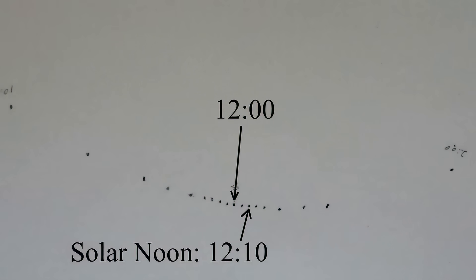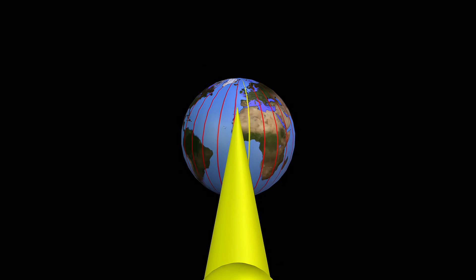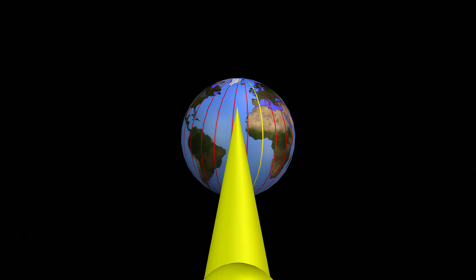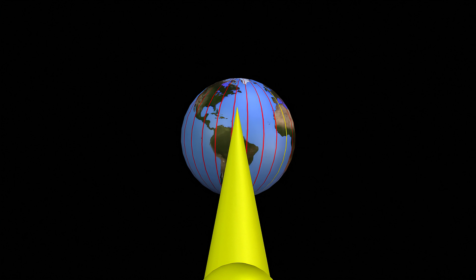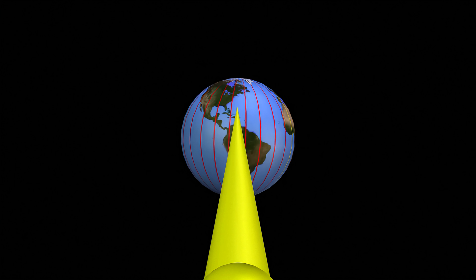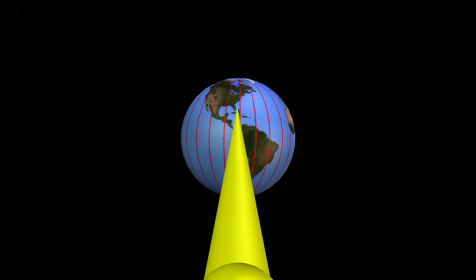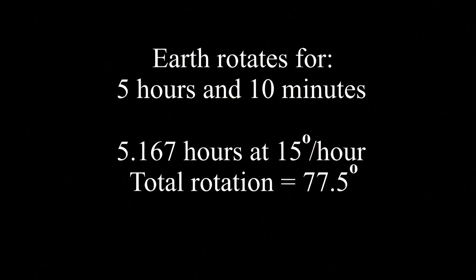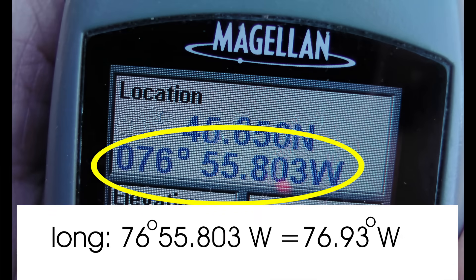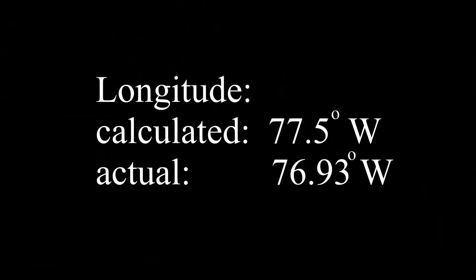Now to calculate our longitude. We have to relate our local time for this solar noon calculation to the time in Greenwich. We know that our time here, Eastern Standard Time, is 5 hours behind Greenwich time. So solar noon here occurred at 5:10 p.m. Greenwich time. This means the Earth rotated for 5 hours and 10 minutes from zero longitude in Greenwich. At 15 degrees per hour, 5 hours and 10 minutes translates to 77.5 degrees of longitude. According to my GPS, my longitude is actually 76.93 degrees west. My calculation missed by half a degree. That's an error of approximately 80 kilometers on the surface of the Earth.